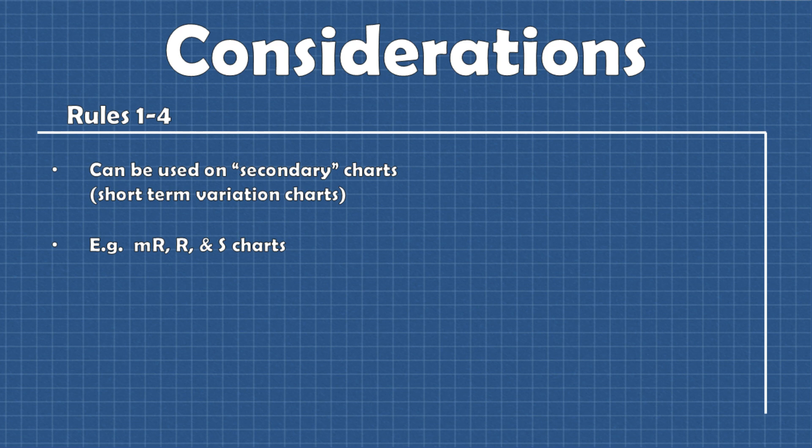And then the last thing I want to talk about is that rules one through four can be used for secondary charts like MR, R and S charts. Just be aware of what each chart is telling you. X bar and X charts are analyzing long term or between subgroup variation while MR, R and S charts are analyzing short term or within subgroup variation.